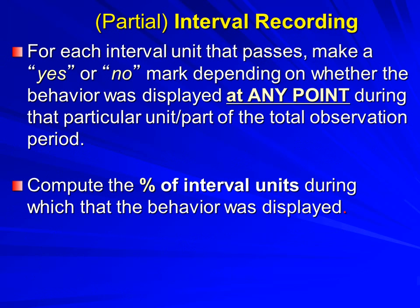With partial interval recording, we determine: was that behavior present at any point, at any time, during that segment — that interval? You need to identify a mark to jot down when the behavior does present itself during that interval, and devise another mark to use when the behavior is not displayed. If we're going to figure the percent of intervals during which the action was present at any point, we need to have an accurate mark for each of the intervals.